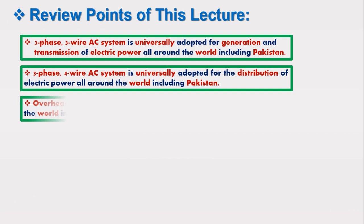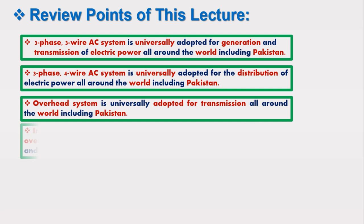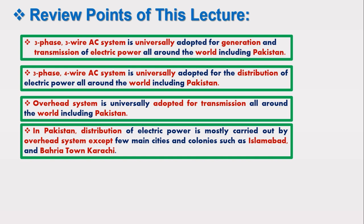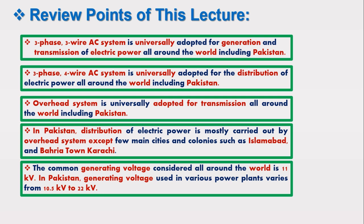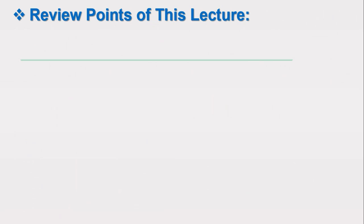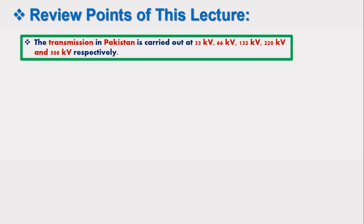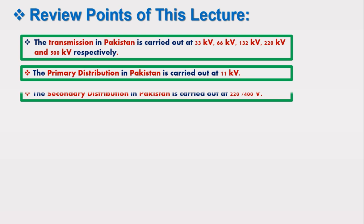Overhead system is universally adapted for transmission worldwide including Pakistan. In Pakistan, distribution of electric power is mostly carried out by overhead system, except in a few main cities and colonies such as Islamabad and Bahria Town, Karachi. The common generating voltage worldwide is 11 kV. In Pakistan, generating voltage varies from 10.5 kV to 22 kV. Transmission in Pakistan is carried out at 33 kV, 66 kV, 132 kV, 220 kV, and 500 kV. Primary distribution in Pakistan is at 11 kV, and secondary distribution is at 220/400 volt.